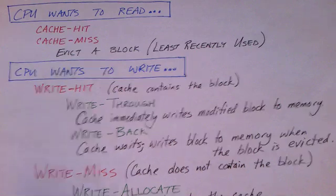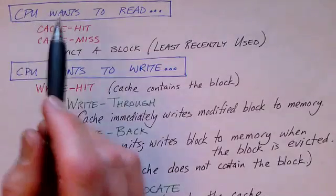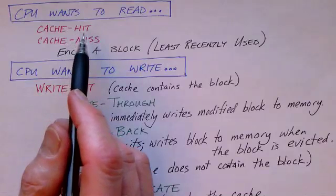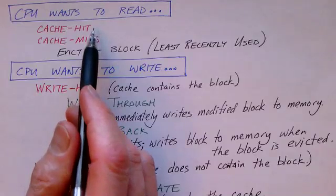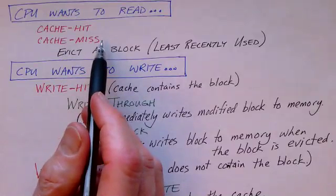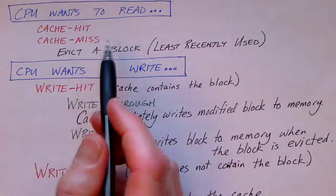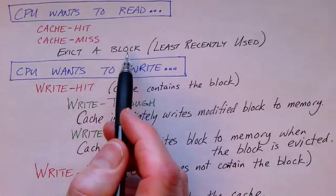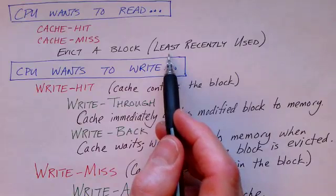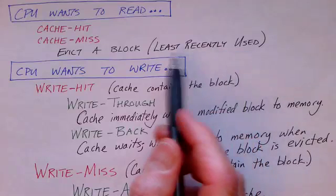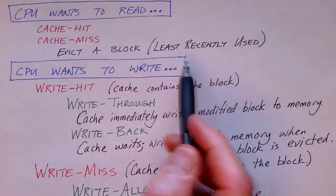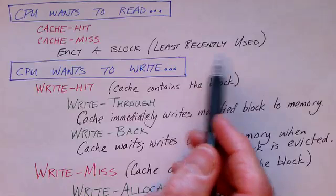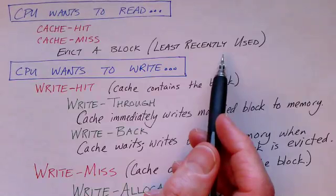Next let's turn to the problem of writes, but before we do that let's talk about a read. If the CPU wants to read a particular byte, it may or may not be in the cache. If it's in the cache, that's a cache hit; if not, it's a cache miss. On a miss, the cache needs to read the block from main memory, but to make room it has to evict a block already in the cache. Ideally we evict the least recently used block — the one used furthest in the past — hoping it's least likely to be needed again soon.